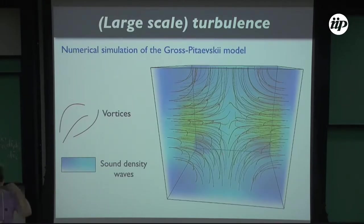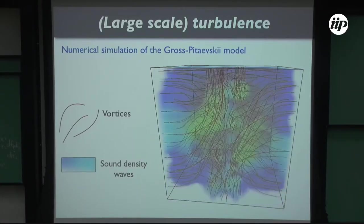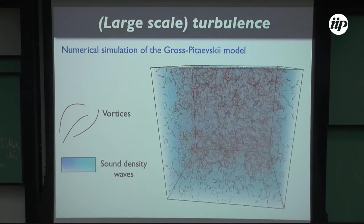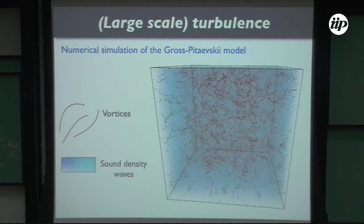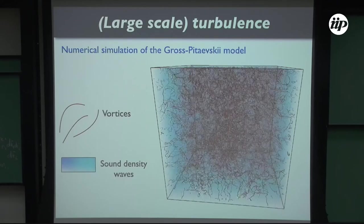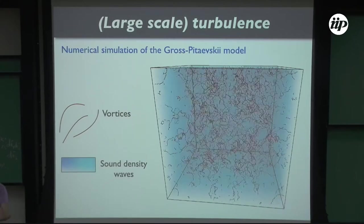This is the Taylor-Green flow that Mark introduced at the beginning of the week. The initial condition has very large-scale vortex rings — red lines are vortex rings, and the bluish rendering corresponds to small fluctuations about the mean density of one. As the flow evolves you get a complex tangle. At some point you see what is called a forest of vortices — very coherent — and then they interact, reconnect, and sound interacts with vortices and is damped.